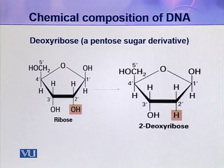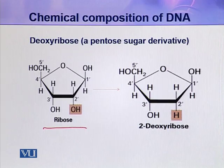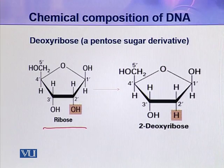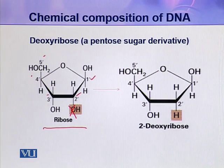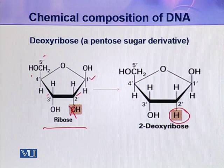Deoxyribose sugar is a pentose sugar derivative — it is derived from ribose sugar. The carbons of this sugar are conventionally numbered with a prime designation: 1 prime, 2 prime, 3 prime, 4 prime, and 5 prime. If at the 2 prime position one oxygen is removed, ribose becomes deoxyribose. So deoxyribose is the first component of a deoxyribonucleotide.